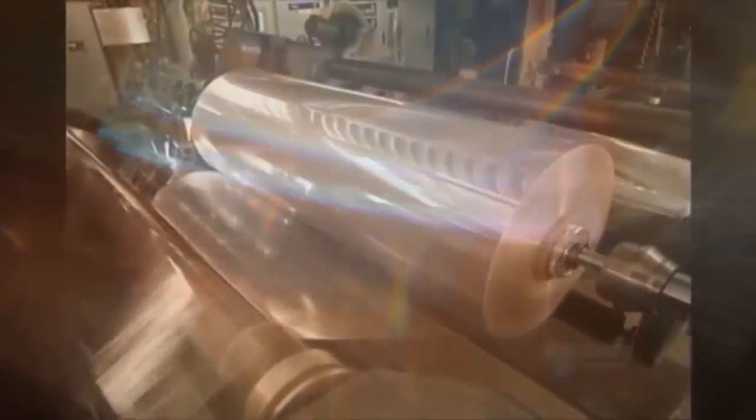An automatic tension adjuster ensures that the machine pulls the film evenly to prevent ripping. The unwinder also applies a solvent to the film's surface. This prevents the film from sticking while unrolling.